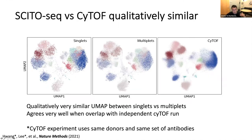Just to convince ourselves the data is comparable to other high-throughput cytometry-based methods, we compared our dataset to CyTOF, which conjugates heavy metals onto antibodies. We used the exact same antibody clones conjugated with 28 different heavy metals and re-ran our samples. Qualitatively we get basically the same data as CyTOF, and quantitatively the frequencies of the various cell populations are also very similar.